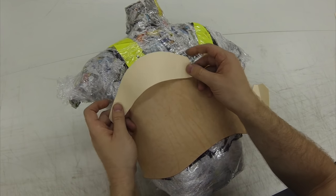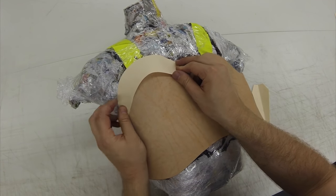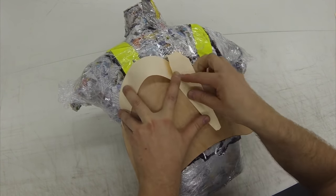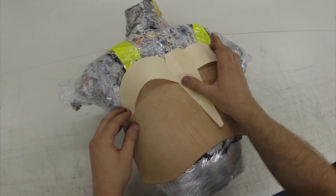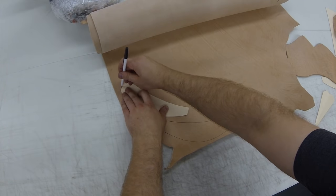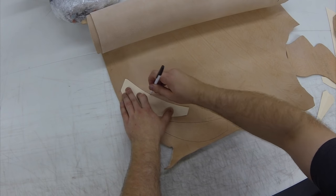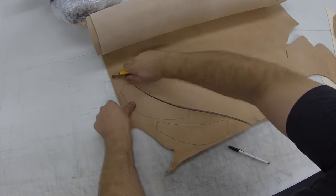But today the video is about a leather breastplate. So I cut out the pattern I was happy with, and now I'm cutting out a couple other pattern pieces. I'm going to cut these out of an 8 to 9 ounce veggie tan leather.